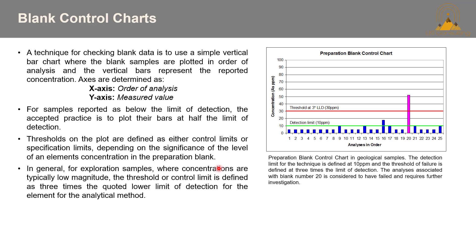The first one we're going to chat about are blank control charts. A technique for checking blank data is to use a simple vertical bar chart where the blank samples are plotted in order of analysis, and the vertical bars represent the reported concentration — here that's arsenic PPM. For samples reported as below the limit of detection, the accepted practice is to plot their bars as half the limit of detection. So here the detection limit is 10 PPM, so anything BDL would be plotted at 5 PPM.